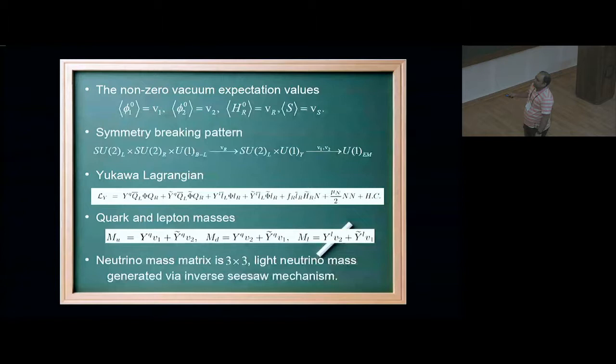All the non-zero vacuum values in this model are given here. Phi-1 and phi-2, which were the bi-doublet neutral fields, are getting vevs which we call V1 and V2. HR0 gets a vev of VR, and the singlet S gets a vev of VS. My symmetry breaking pattern is this one. When I give vev to this HR, this SU2R cross U1B-L breaks into U1Y, and then when I give vev to V1 and V2, I finally get U1EM.